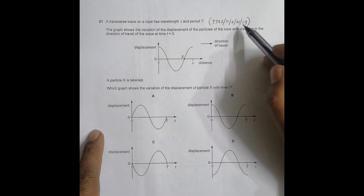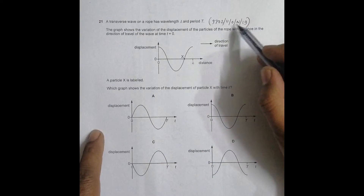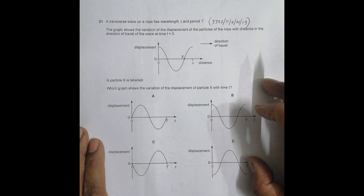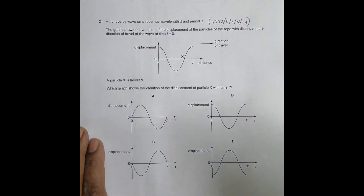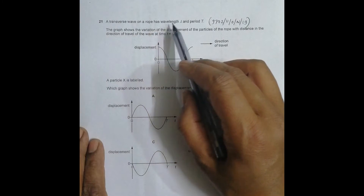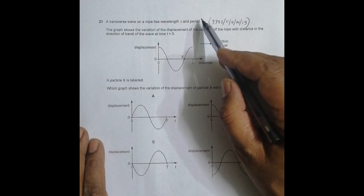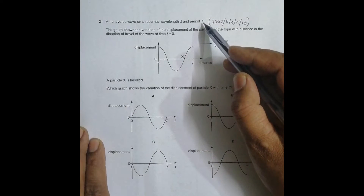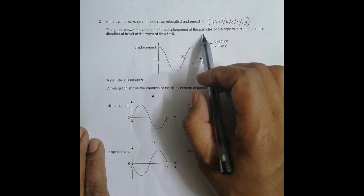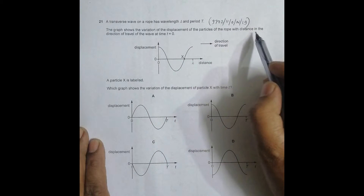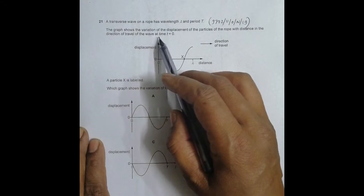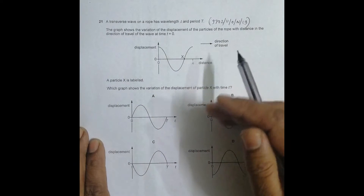Hello folks, this is the 2019 October/November Paper 1, question number 21. This question is concerned with the chapter on waves. It shows that a transverse wave on a rope has a wavelength lambda and a time period T. The graph shows the variation of the displacement of the particles of the rope with the distance in the direction of travel of the wave at time t equal to zero.